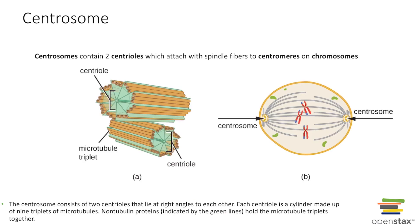Another important organelle in mitosis is the centrosome. Centrosomes contain structures called centrioles, which release mitotic spindle fibers. These spindle fibers attach onto the sister chromatids at a region of the centromere called the kinetochore, and they move the chromosomes from place to place.